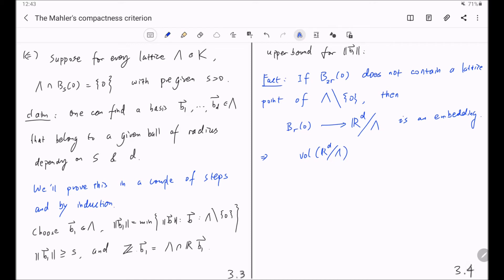When the lambda is unimodular, this volume is 1. And this is greater or equal to the ball centered at 0 with radius r. And this inequality follows from this embedding. Because this is how the Lebesgue measure in here is induced from the Lebesgue measure in this Euclidean space.